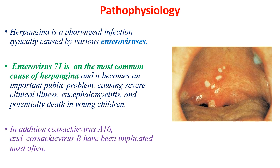Herpangina is a pharyngeal infection typically caused by enteroviruses. From the enteroviruses, Enterovirus 71 is the most common cause of herpangina. In addition to enteroviruses, herpangina is also caused by Coxsackievirus A16, Coxsackievirus B, and other viral infections.